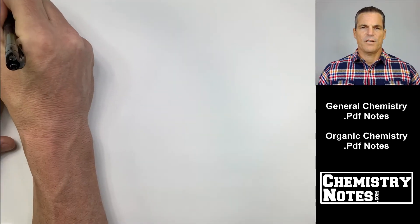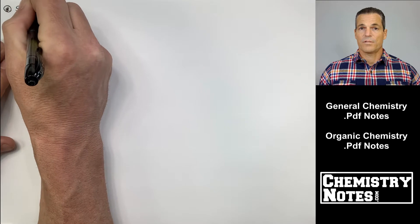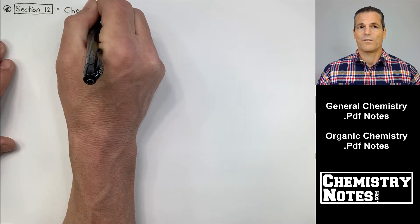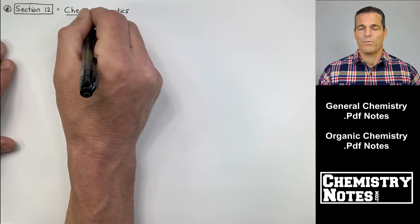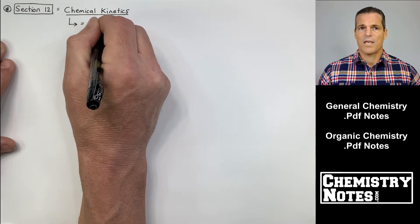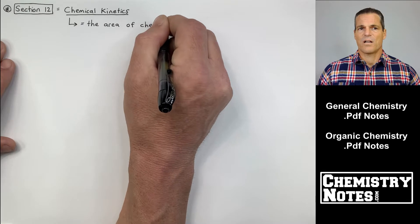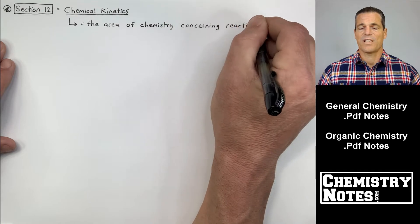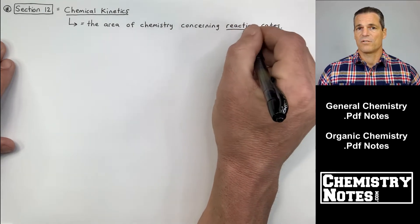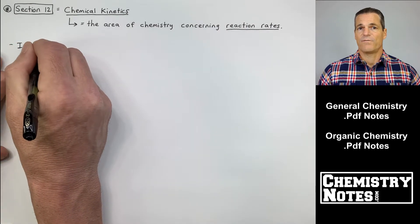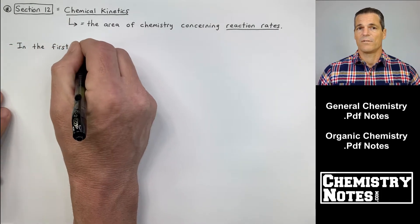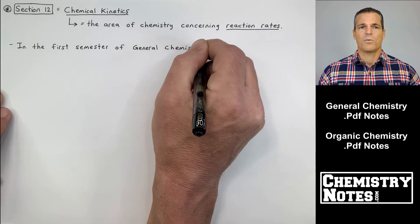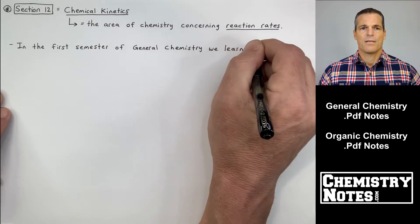Hi everybody, Justin here from chemistrynotes.com. We're starting a brand new semester — this is our second semester of notes. The first chapter is Section 12: Chemical Kinetics. This is video number one for Section 12, so let's get started. At the top of page one of our notes it says Section 12: Chemical Kinetics.